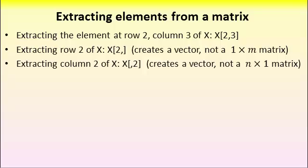So keep this in mind. You can extract rows and columns from matrix using this notation. Row comma or comma column. But R will then create a vector and not a row vector or a column vector.